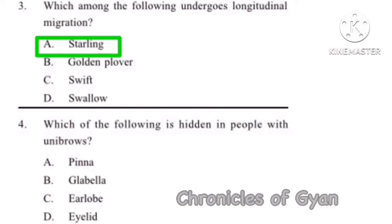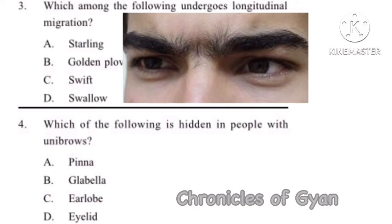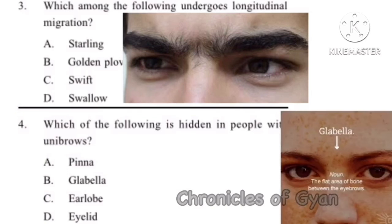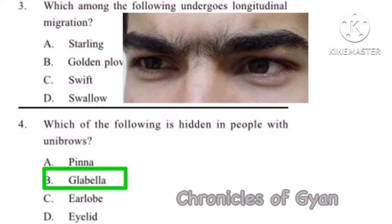Question 4: Which of the following is hidden in people with a unibrow? The correct answer is Option B.